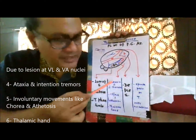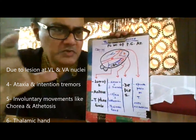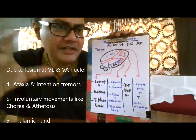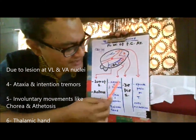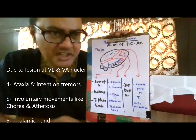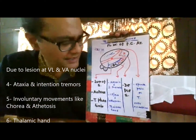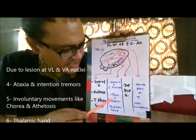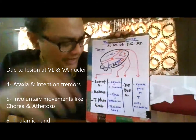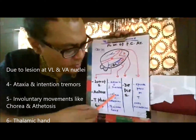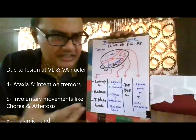There will be motor abnormalities related to cerebellar disorder and basal ganglia disorder. There may be ataxia and intention tremors because cerebellar fibers going to the cortex are compromised. There may also be resting abnormal movements, especially chorea and athetosis-like movements.